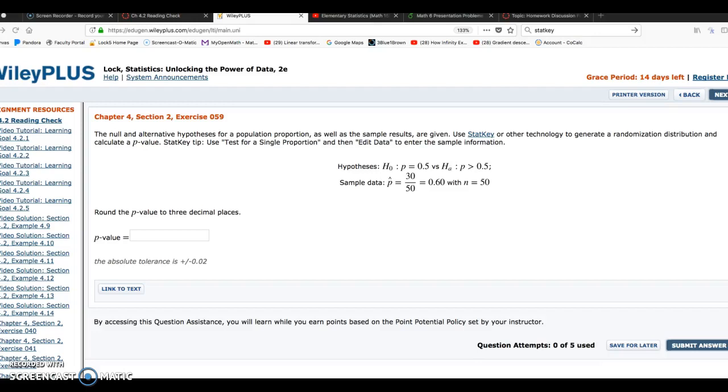Hello. In this video, I want to go over a homework problem, exercise 59 from chapter 2, section 4. I want to go over this to show you how to compute a p-value using StatKey's bootstrap randomization distribution feature.